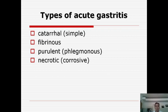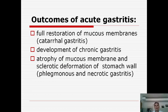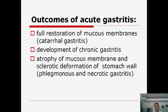The outcomes of acute gastritis: full restoration occurs due to catarrhal gastritis — we can see full restoration of the mucous membrane, which is the most favorable type. Some types of gastritis can lead to chronic gastritis type B more often, or atrophy of the mucous membrane after deep necrosis. Sclerotic deformation after phlegmonous gastritis of the stomach wall can cause deformation, which is an unfavorable outcome.